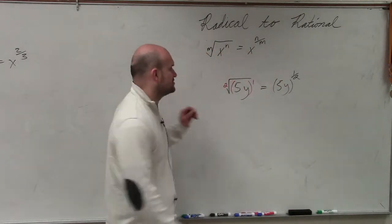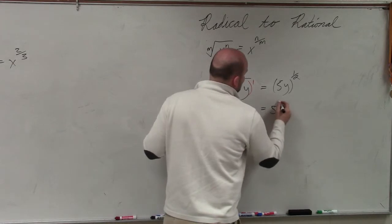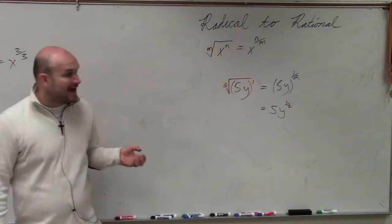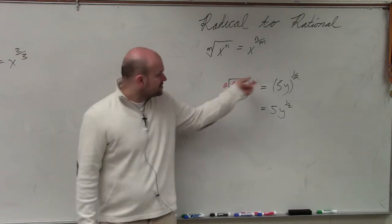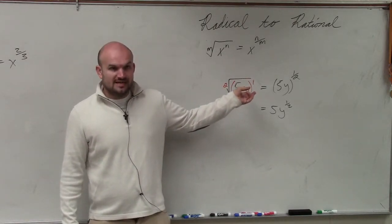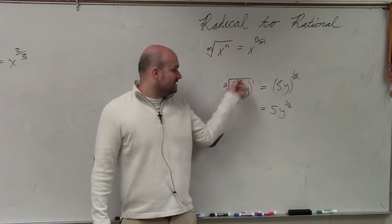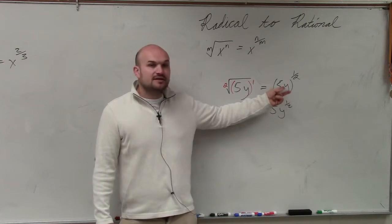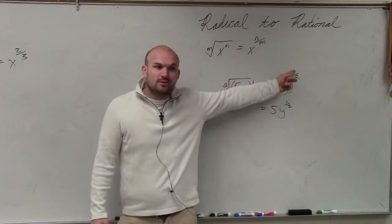Now, one of the most common mistakes that students make is 5y to the 1 half power. But you have to have that parenthesis, because you're taking the square root of 5 and y, right? So remember, you're taking the square root of 5 and y has to be represented as taking 5 and y being raised to the 1 half power.